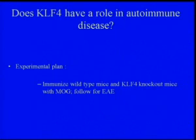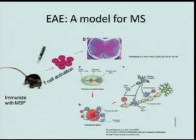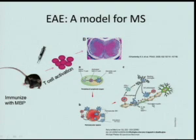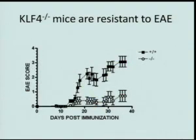We first globally assessed whether KLF4 was required for the generation of EAE. In inducing EAE, mice are immunized with myelin basic protein, which leads to activation of T cells, destruction of myelin, and trafficking of activated T cells into the CNS, where they again meet antigen-presenting cells and destroy myelin. The result was that mice deficient in KLF4 were essentially resistant to the induction of EAE.